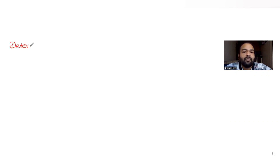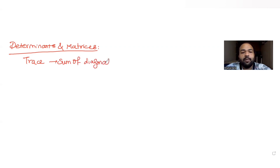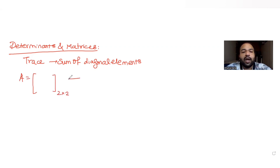Today's question is from the topic of determinants and matrices. In this question, we have been told that the trace of a matrix is given by the sum of its diagonal entries. We are told that matrix A is a 2×2 matrix which has trace 3, and the trace of matrix A³ is given to us as minus 18.